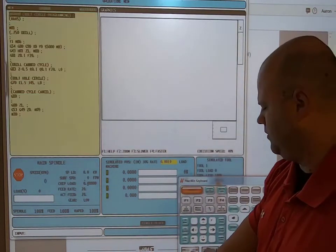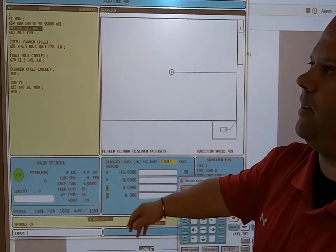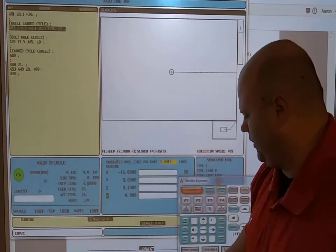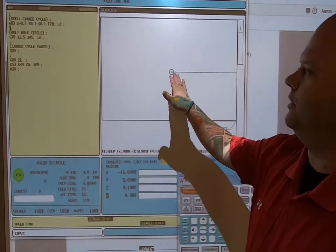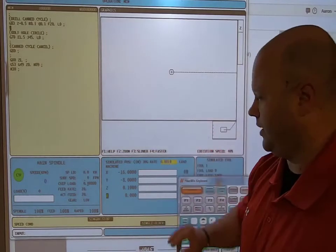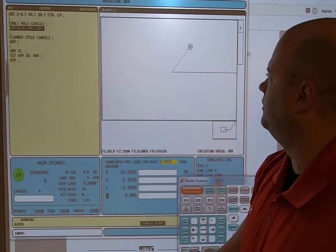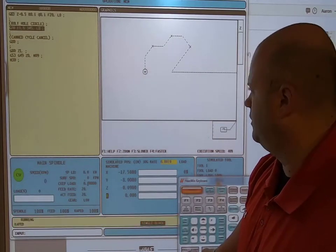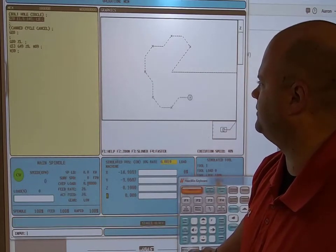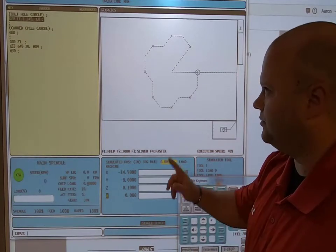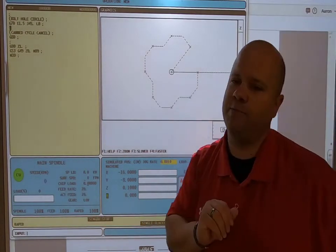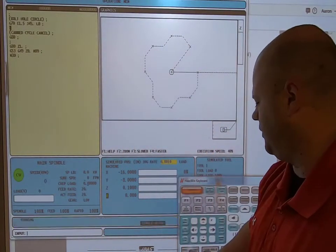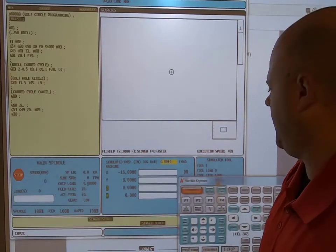Turn on our single block and let's go through. I am now at X,Y zero. It picked up my G83 just now, but it did not drill a hole. Now it's going to start going around. There's one hole, two hole, three, four, five, six, seven, eight. Drills the hole and then immediately comes back to center. So that's how that canned cycle works.